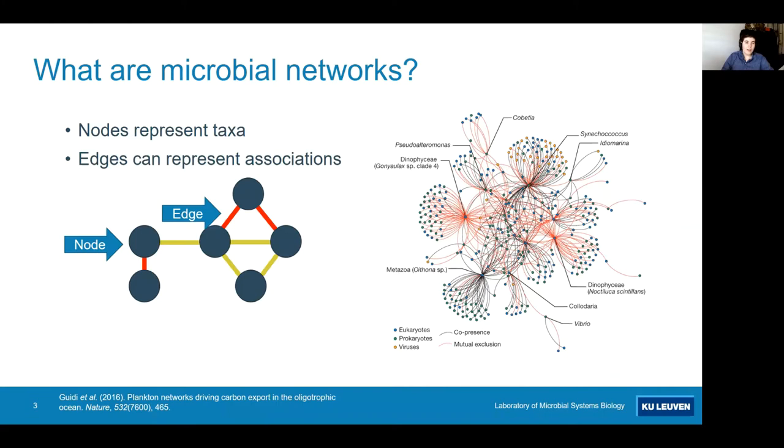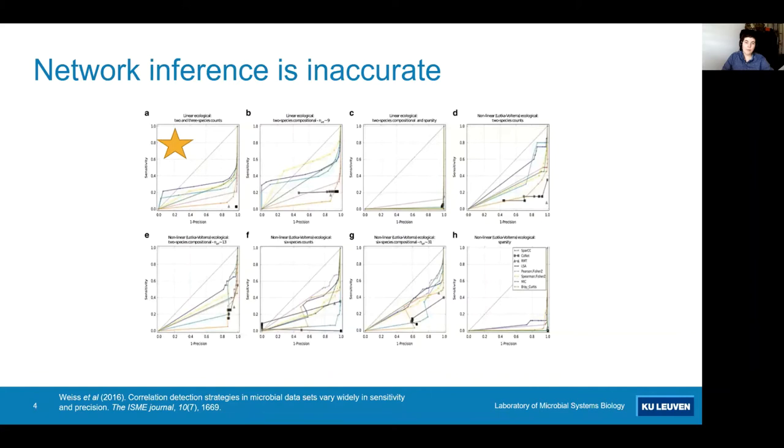So microbial association networks are a way to predict these important biotic interactions from count data or sequencing data. And you see an example of such a network on the right. We have here the circles representing different species of eukaryotes, prokaryotes or viruses and then the lines between them, the edges, represent either co-presence or mutual exclusion. So in general these nodes tend to represent taxa but they can also represent important metadata and the edges represent associations that can be inferred using a range of different statistical approaches.